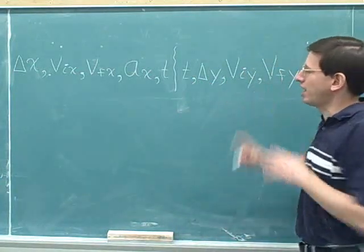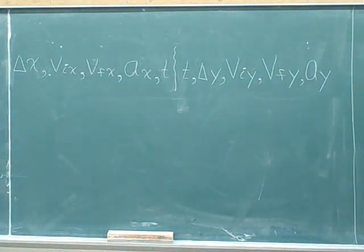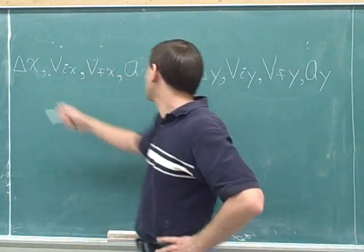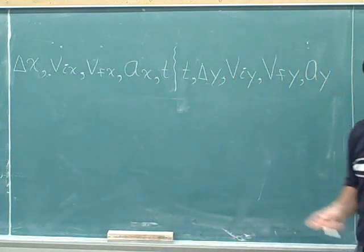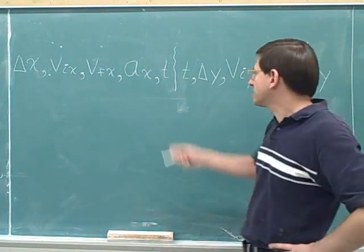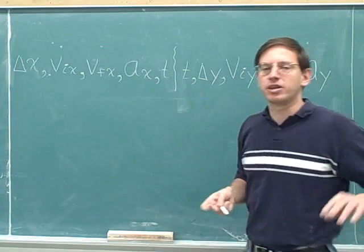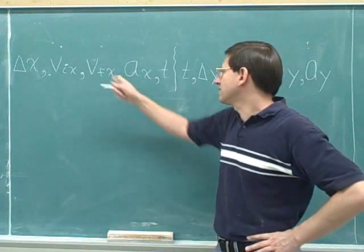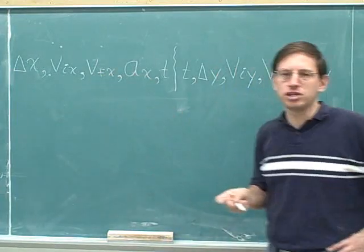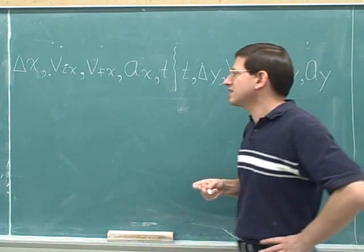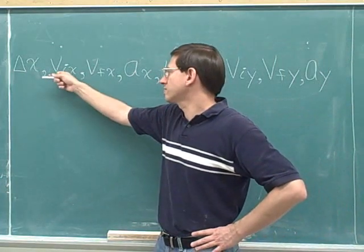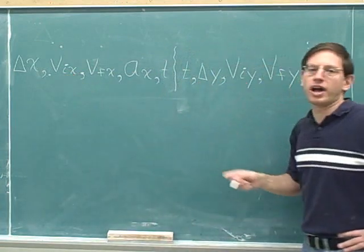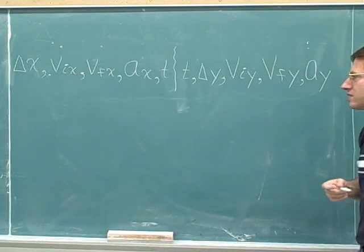Make sure you memorize this exact way of writing all of these variables. Displacement doesn't need subscripts because we can show directly that this is the x displacement and this is the y displacement. Time doesn't need subscripts because we're not breaking it into components. But all other variables — velocity initial, velocity final, and acceleration — they all need subscripts. Velocity needs two subscripts: one to show whether it's initial or final, and another to show whether it's the x or y component.